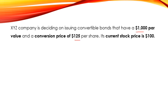The stock price is $100 per share. As you can see, the conversion price is higher than the current stock price. Usually the conversion price is set between 20 to 30% higher than the current stock price.